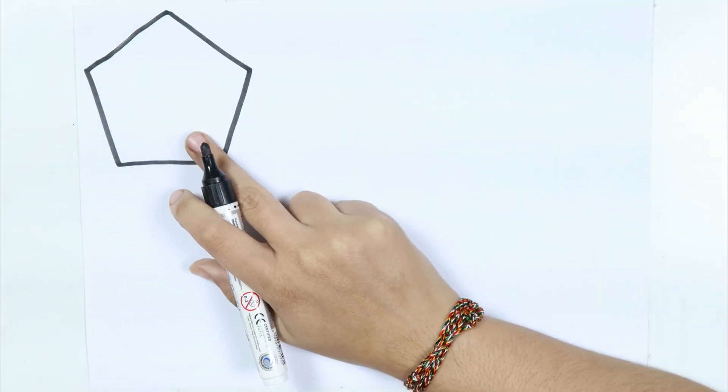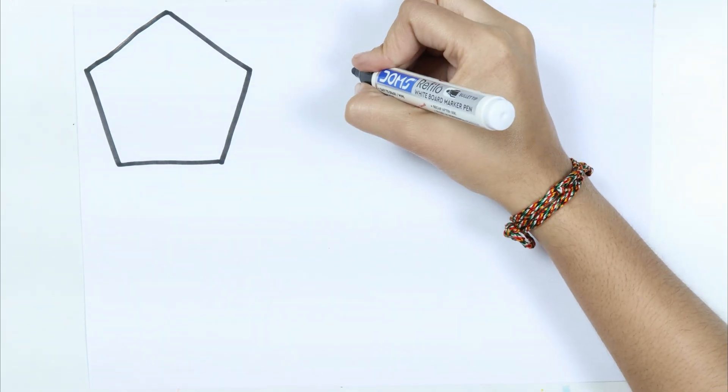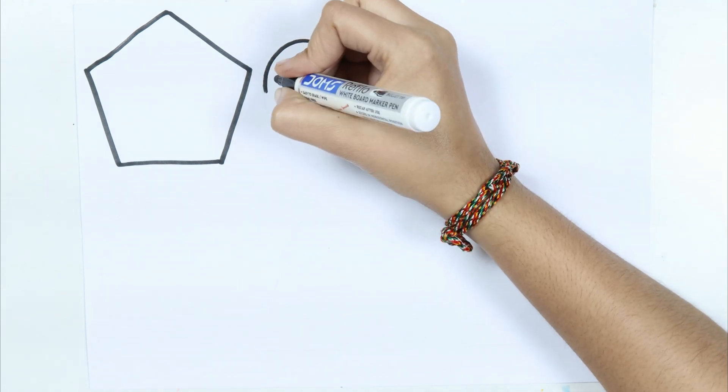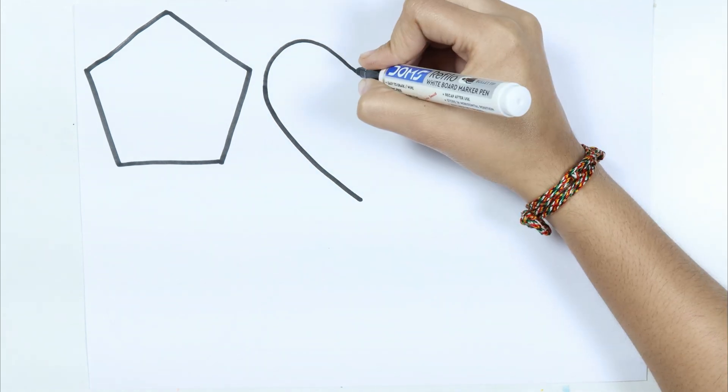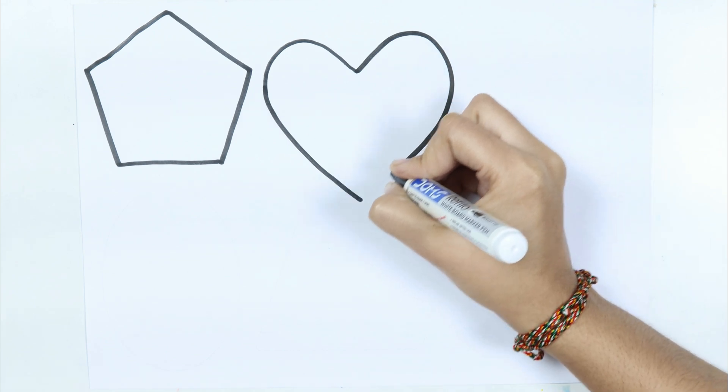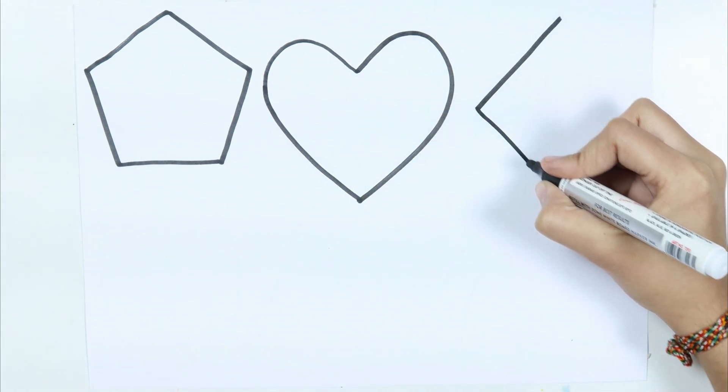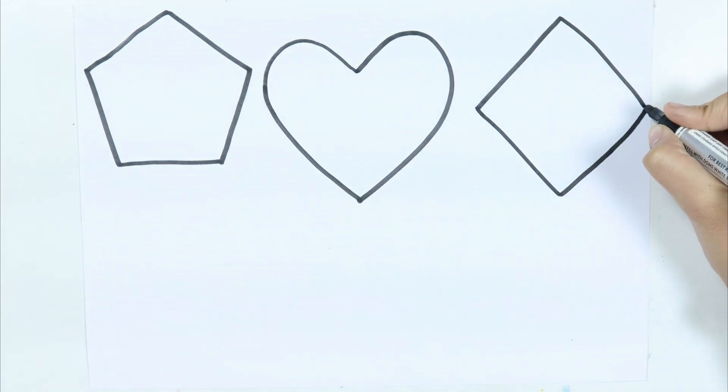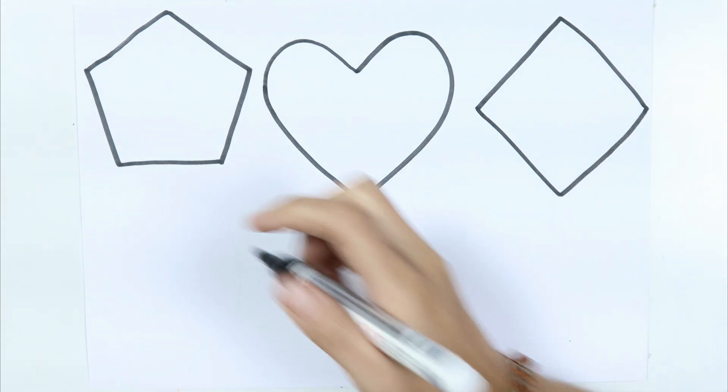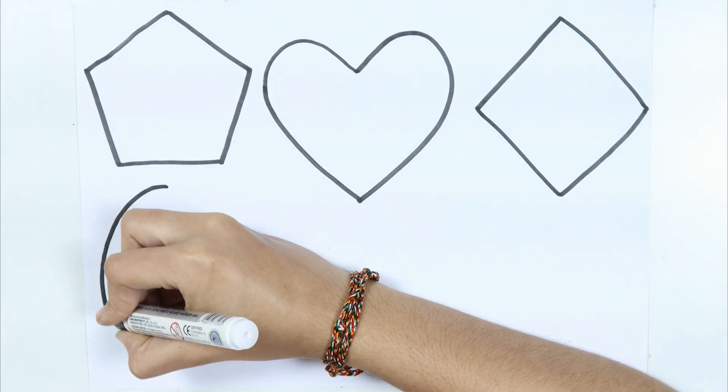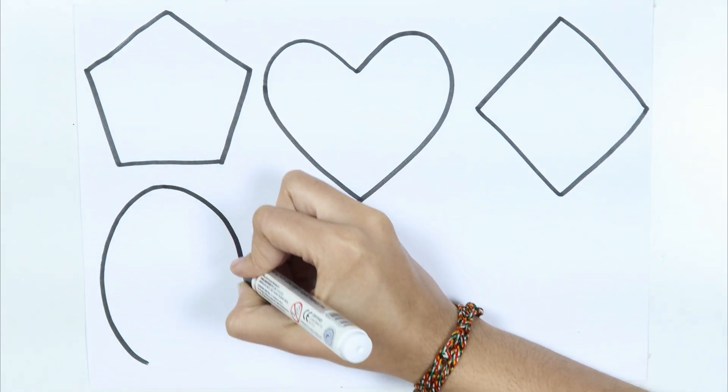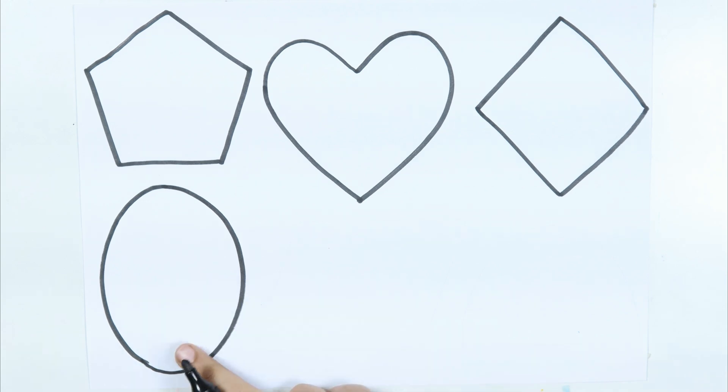Twinkle twinkle little star, how I wonder what you are. Up above the world so high, like a diamond in the sky. Twinkle twinkle all the night. Heart. Rhombus.